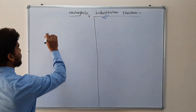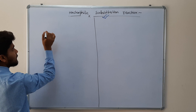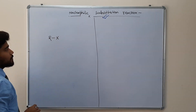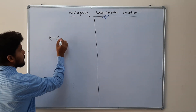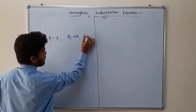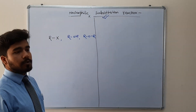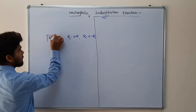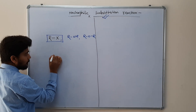For example, in chemistry, if we talk about substitution reaction, let's say we have an alkyl halide RX. There are a few compounds which give substitution reaction very commonly, namely alkyl halides, alcohols, and ethers. These are some common compounds which will give nucleophilic substitution reaction.